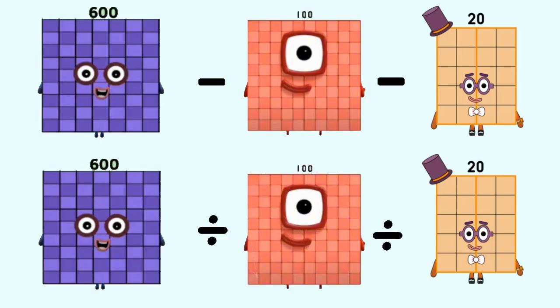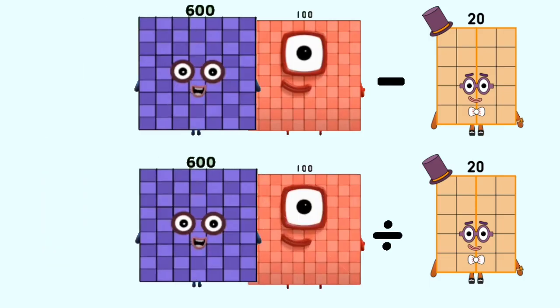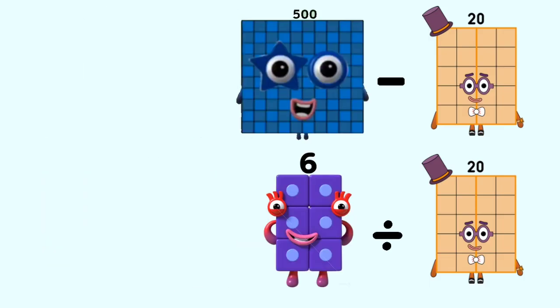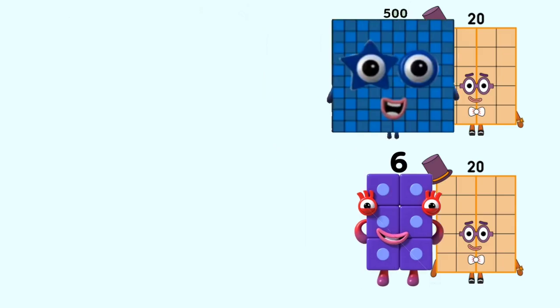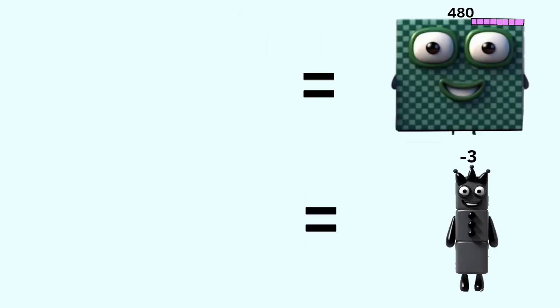Number blocks 600 minus 100 and divided by 100 equal 500 and 6. Number blocks 500 and 6 minus 20 and divided by 20 equal 480 and negative 3.